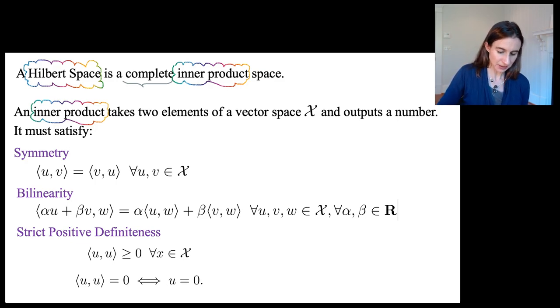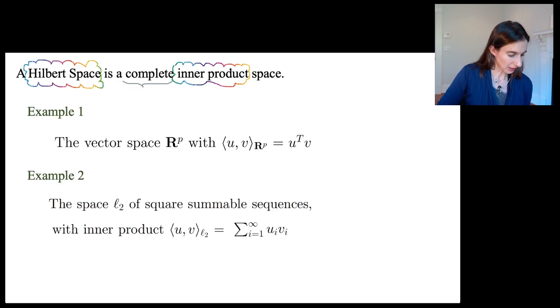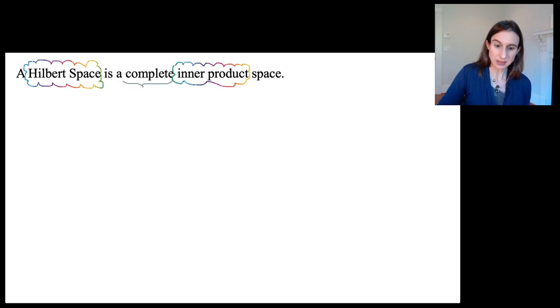And then also if the dot product between something and itself is zero, that thing had better be zero. And then completeness is easy. It just means that the limit of elements that are in the space are also in the space.